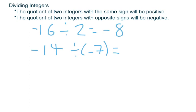And then we divide the absolute values, 14 by 7. This answer should be a positive 2.